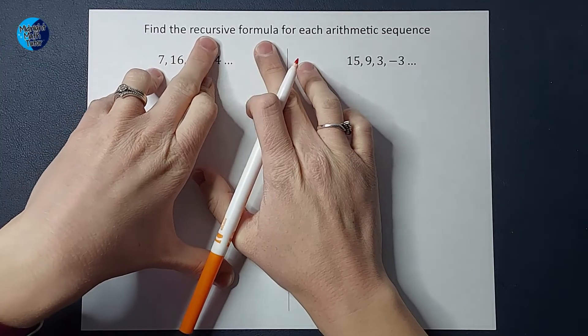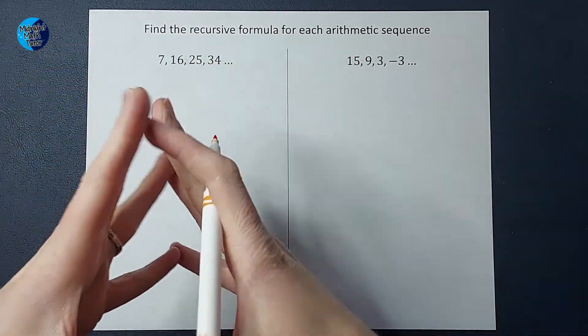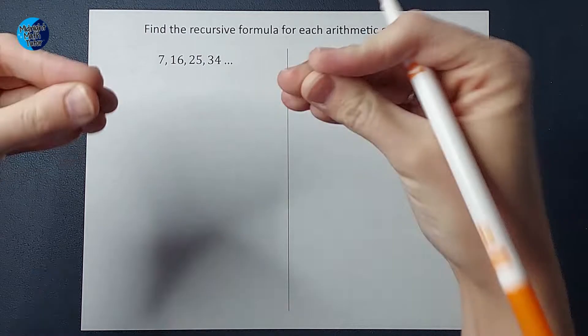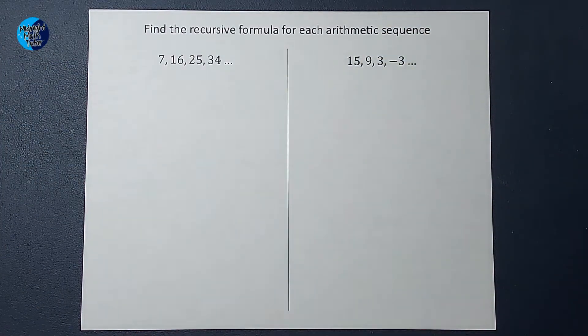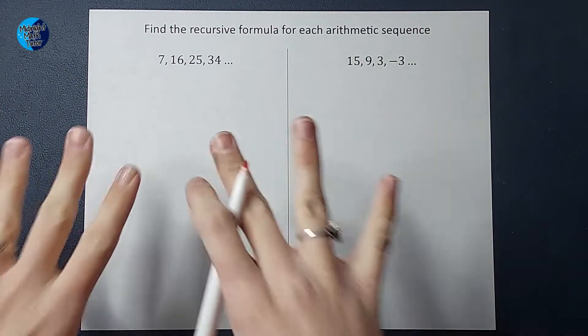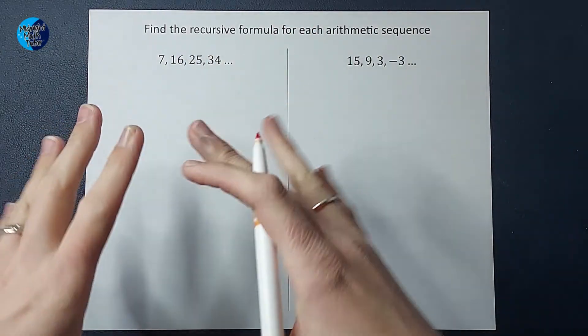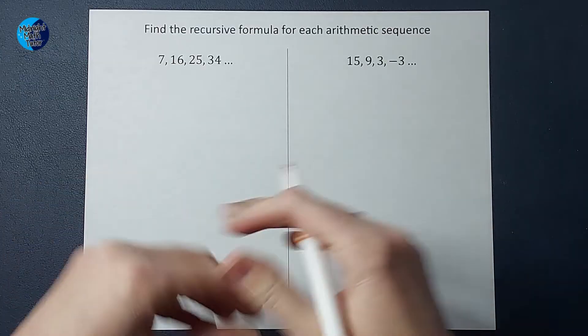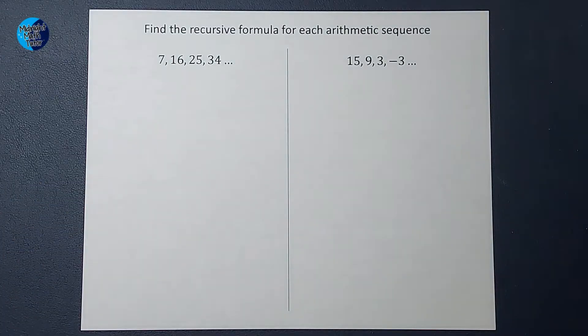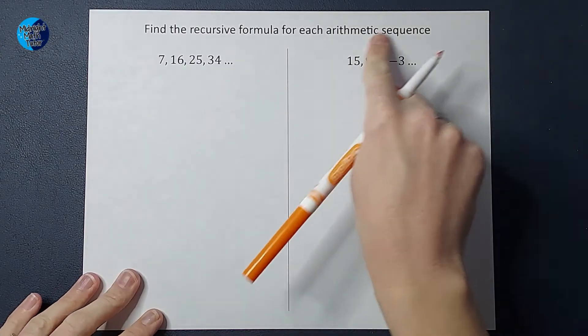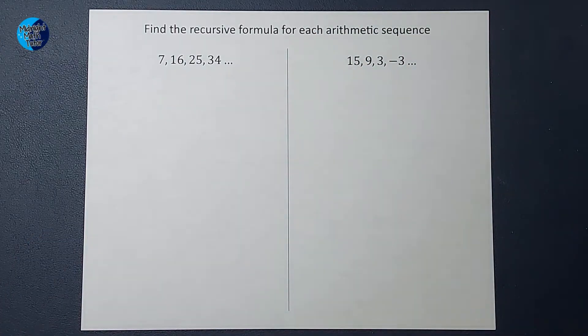The purpose of a recursive formula is to help us find more numbers in this sequence. This dot dot dot signifies that this sequence keeps going, it doesn't stop there. As you're doing problems like this, you're also going to hear about explicit formulas and geometric sequences. If you're looking for those videos, I will link a playlist in the corner for you. But in this video, we are focusing on a recursive formula for an arithmetic sequence.